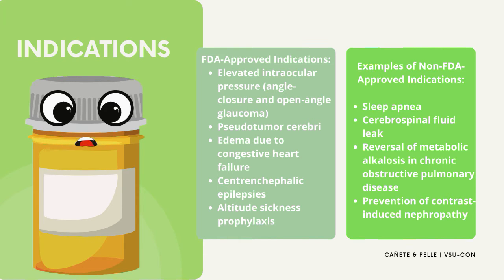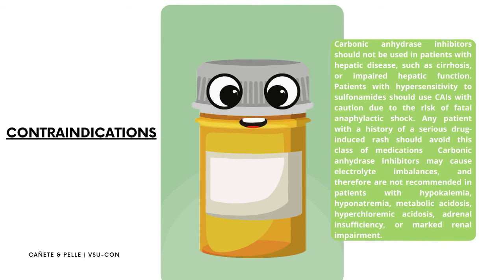Non-FDA-approved indications include sleep apnea, cerebrospinal fluid leak, reversal of metabolic alkalosis in chronic obstructive pulmonary disease, and prevention of contrast-induced nephropathy. Contraindications: I should not be given to patients with hepatic diseases such as cirrhosis or impaired hepatic function. Patients with hypersensitivity to sulfonamides should use carbonic anhydrase inhibitors with caution due to the risk of fatal anaphylactic shock. Any patient with a history of a serious drug-induced rash should avoid this class of medications.